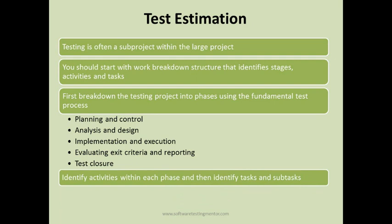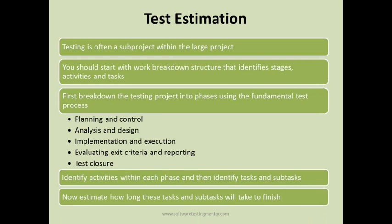Then identify what the activities will be within each phase — for example, what activities fall in the planning and control phase, and what activities fall in the analysis and design phase. Then identify tasks and subtasks for those activities. Once you are done identifying activities, tasks, and subtasks, you can estimate how long these will take to finish. This is the right way to do test estimation.